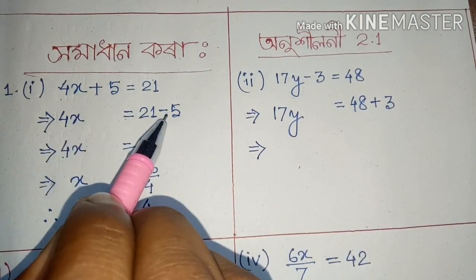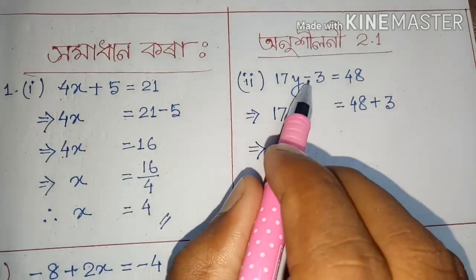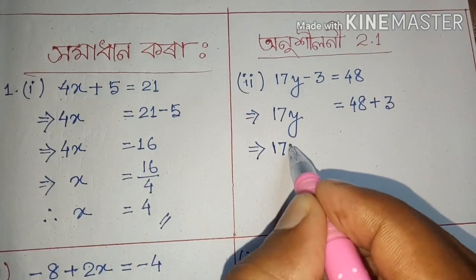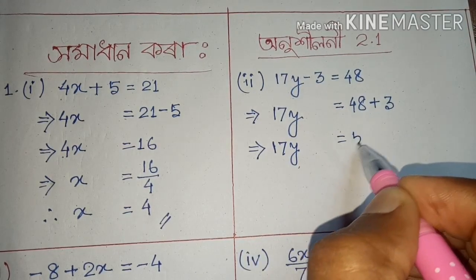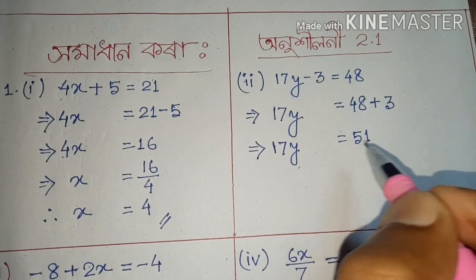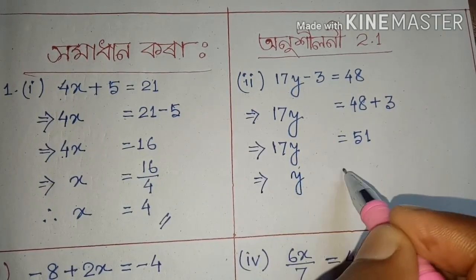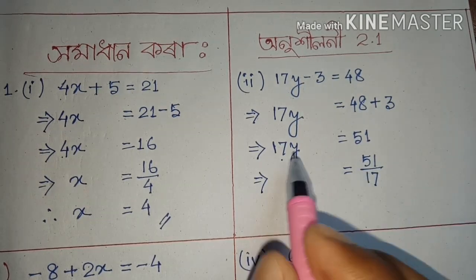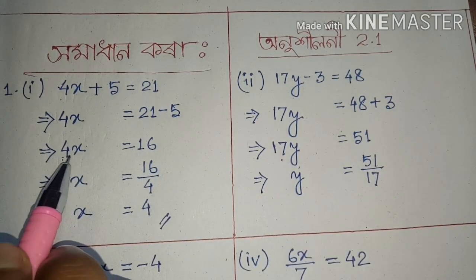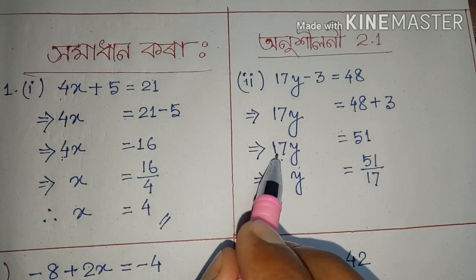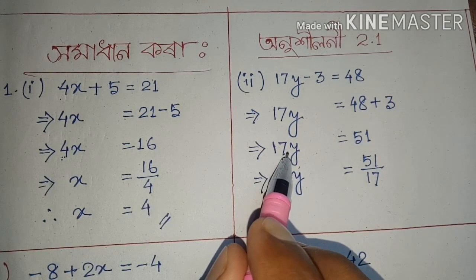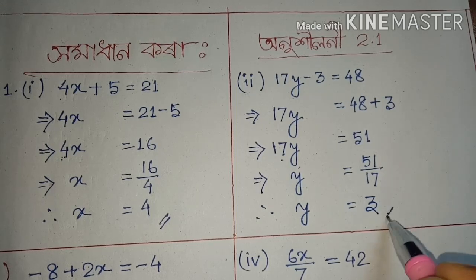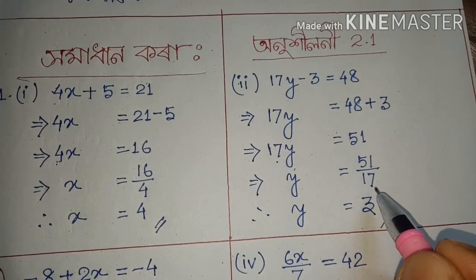So plus 3 over: 17y equals 48 plus 3, which equals 51. So 17y equals 51. Y equals 51 divided by 17, which gives us y equals 3. It's equal to 3. This is the account, which is our answer.